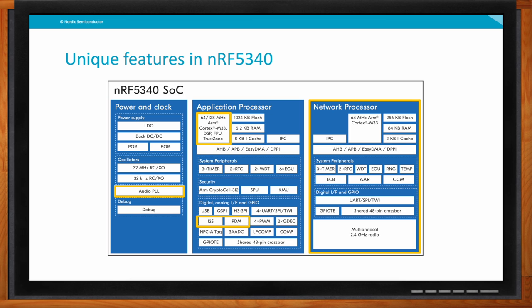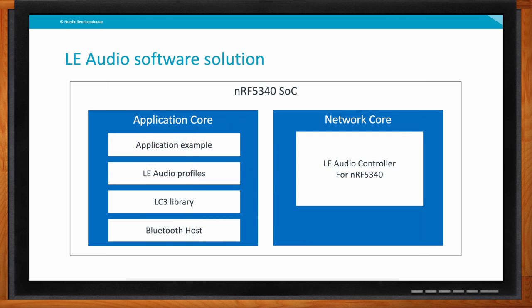We also need to talk about software — what does that look like for the NRF5340? The software and samples are all included in our NRF Connect SDK, which is the software development kit we use for basically everything — it programs all our multi-protocol SOCs, cellular SIPs, and will even be used for Wi-Fi in the future. For this specific application, you run the LE audio controller on the network core because it needs to run frequently and the network core excels at using as little power as possible. Your application runs on the application core, where you also run the LE audio profiles and the LC3 library, which you can get from us as a binary free to use. You would also run the Bluetooth host on the application core.